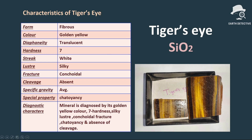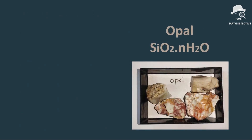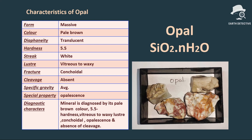Tiger's eye can be identified by its golden yellow color, hardness seven, silky luster, conchoidal fracture, and chatoyancy. Chatoyancy is an optical phenomenon exhibited by certain minerals in reflected light, showing a movable wavy or silky sheen that changes position as the mineral is turned. Cleavage is absent. The next mineral of the silica group is opal, diagnosed by its pale brown color, hardness 5.5, vitreous to waxy luster, conchoidal fracture, and the special property of opalescence — a milky or pearly reflection from the interior of the mineral. Absence of cleavage is also a characteristic of opal.